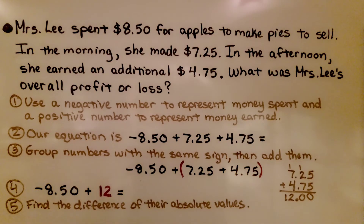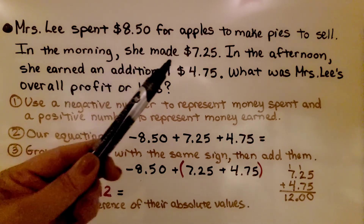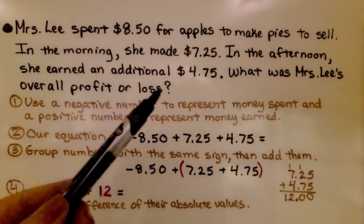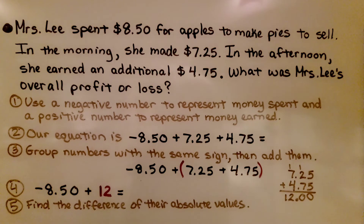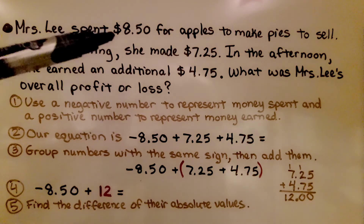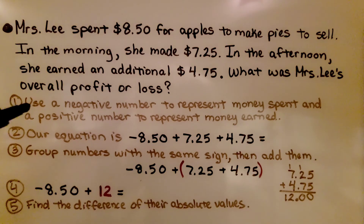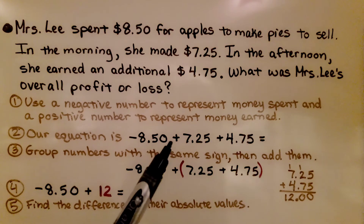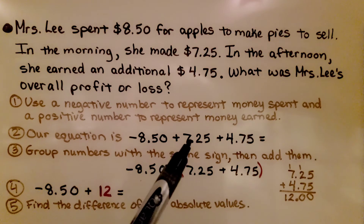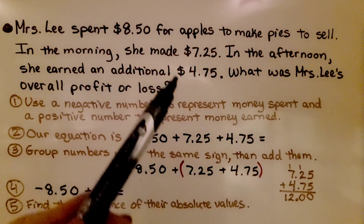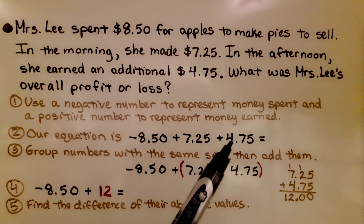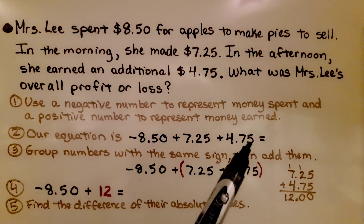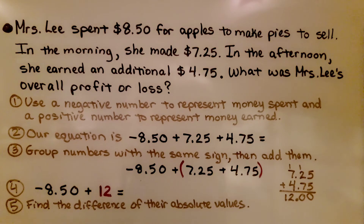Mrs. Lee spent $8.50 for apples to make pies to sell. In the morning she made $7.25, and in the afternoon she earned an additional $4.75. What was Mrs. Lee's overall profit or loss? We use a negative number for money spent and a positive number for money earned. Our equation is negative 8.50 plus positive 7.25 plus positive 4.75.